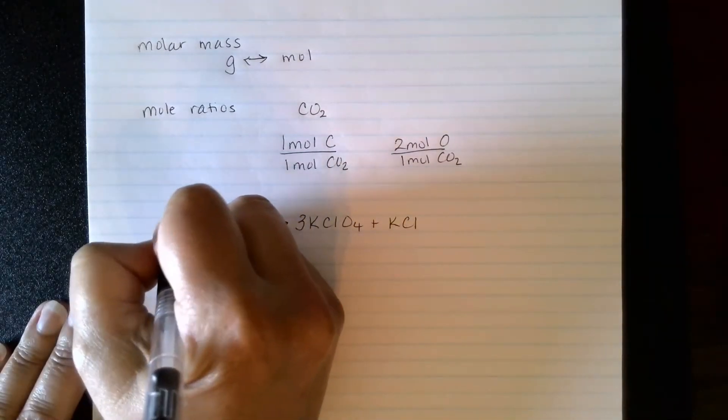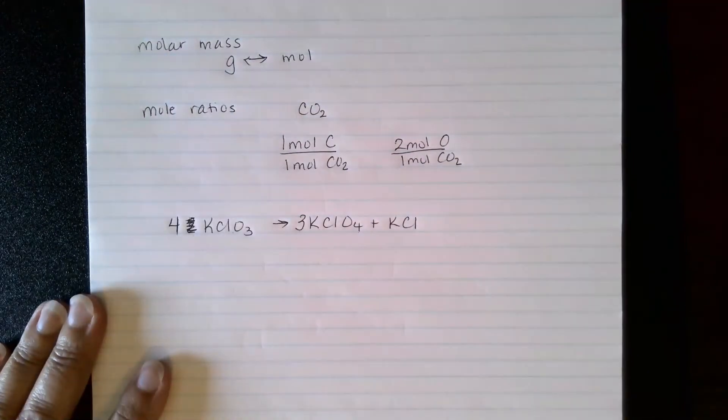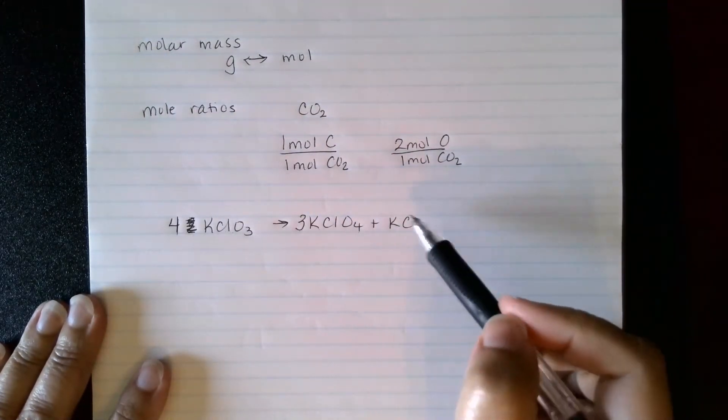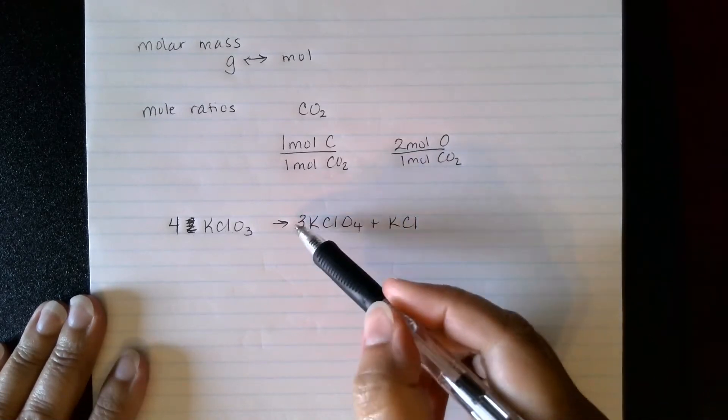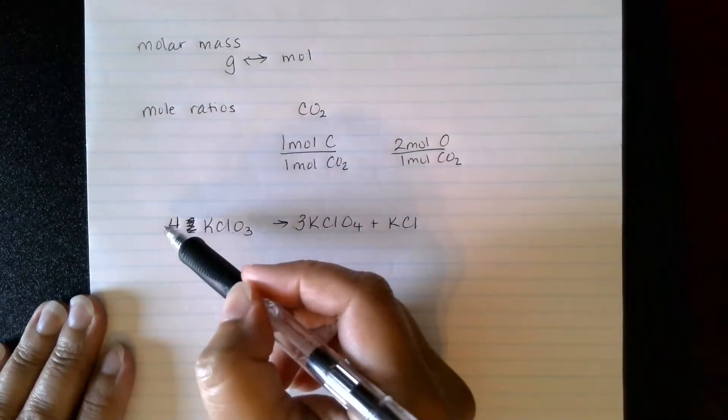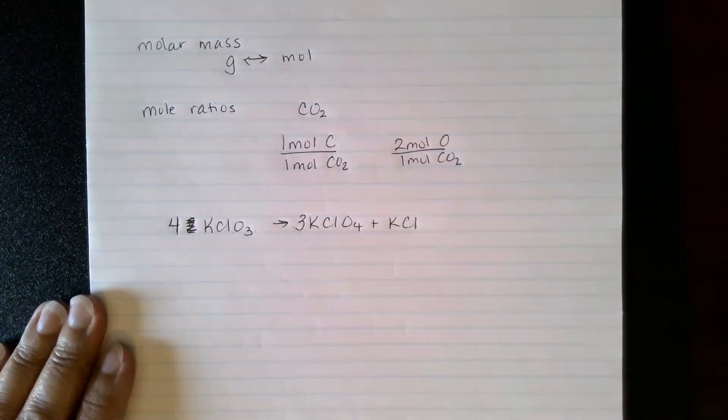Then I have four Cl's on the left, so I have three Cl's plus one more is four. Then I have three times four is twelve O's, and four times three is twelve O's.